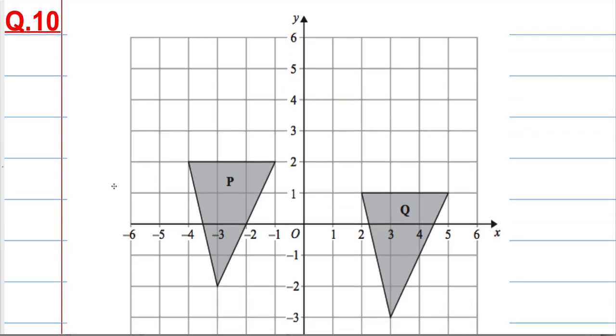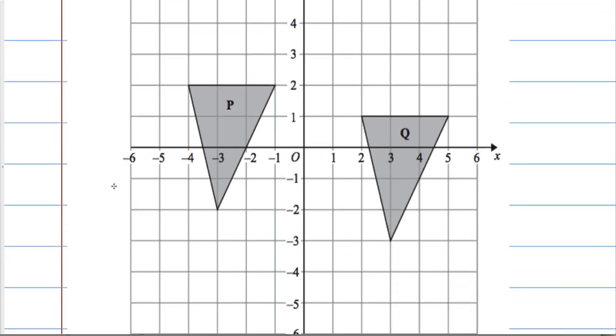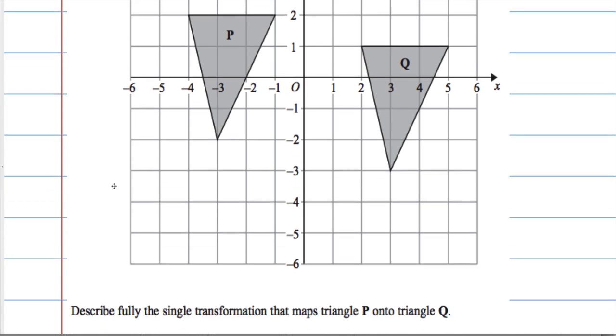In section 10, we're given this coordinate grid with shapes P and Q on it and we're asked to describe fully the single transformation that maps triangle P onto triangle Q. These types of questions are so frequent it would be a huge mistake to not know your transformations for the exam.